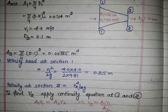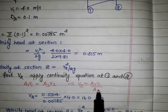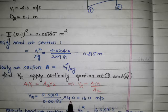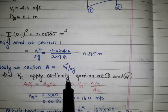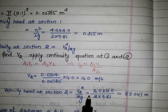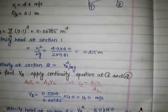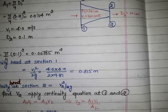Since a1, a2, and v1 are all known, we calculate v2 = 16 meter per second. Substituting into the velocity head formula, the velocity head at section 2 is v2²/2g = 13.047 meter.